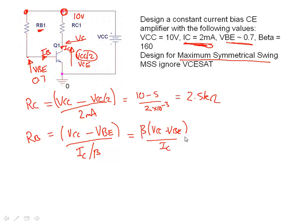Tidying up that expression, I prefer to put beta on the top: beta times VCC minus VBE all over IC keeps it really simple. Put some numbers in: 160 times 10 minus 0.7 all divided by 2 milliamps. If we calculate that value, we will come up with 744 kilo ohms.